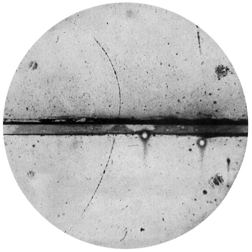Charles Thomson Rees Wilson, a Scottish physicist, is credited with inventing the cloud chamber. Inspired by sightings of the Brocken Spectre while working on the summit of Ben Nevis in 1894, he began to develop expansion chambers for studying cloud formation and optical phenomena in moist air. Very rapidly he discovered that ions could act as centers for water droplet formation in such chambers. He pursued the application of this discovery and perfected the first cloud chamber in 1911.